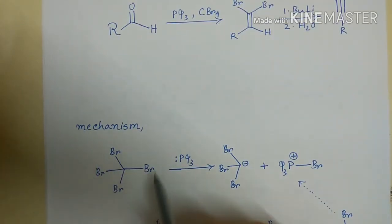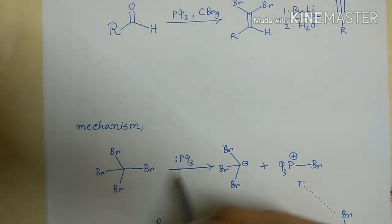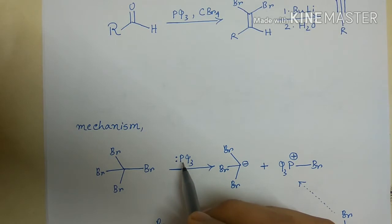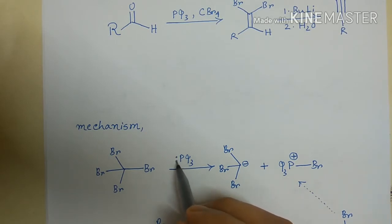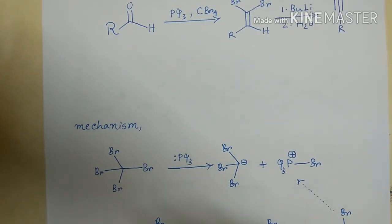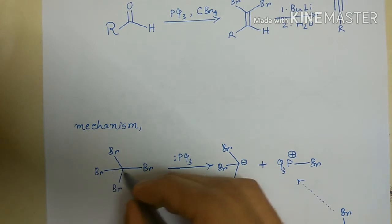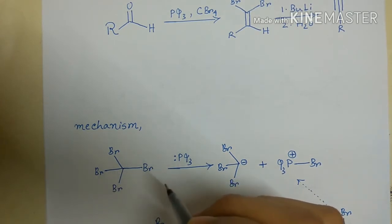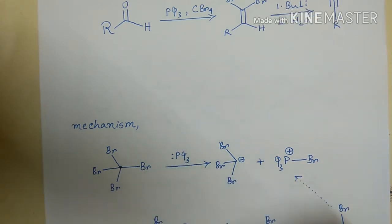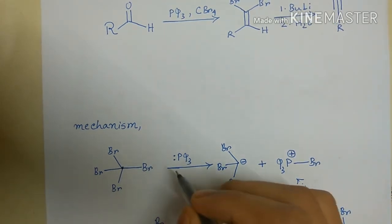Let us discuss the mechanism of this reaction. This is the structure of tetrabromomethane (CBr4). When we treat tetrabromomethane with triphenylphosphine, which is a nucleophile because there is a lone pair on the phosphorus atom, it can attack any electrophilic center. In this case there are two electrophilic centers: one is the central carbon atom and another is the bromine.